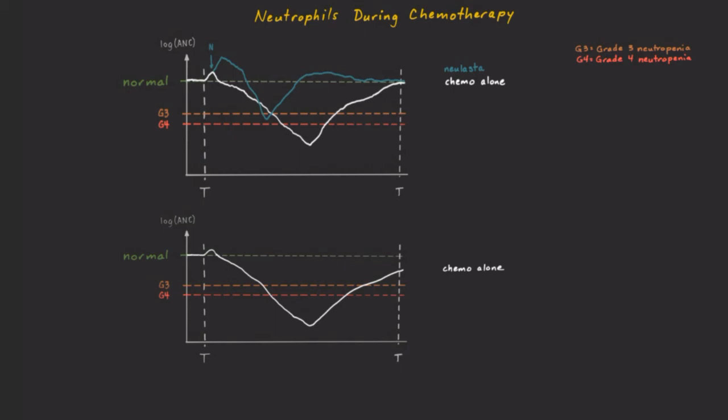It's still not low enough to halt a treatment, but you can imagine how this would affect the next treatment cycle. Each cycle might recover less and less until we're below the grade 3 or grade 4 neutropenia lines. At that point, the treatments will be delayed.